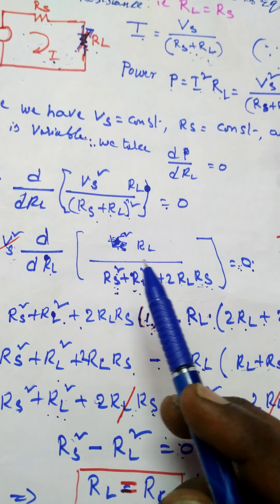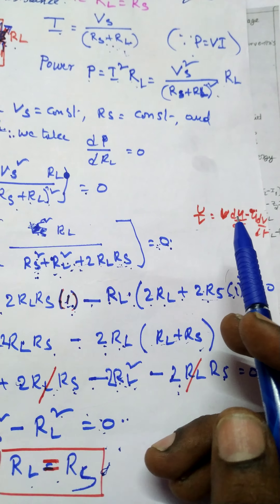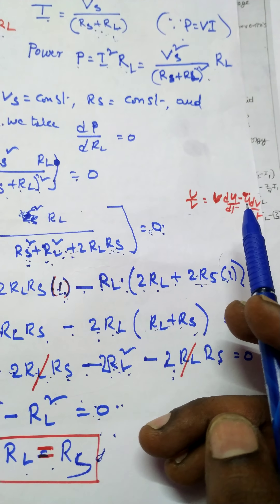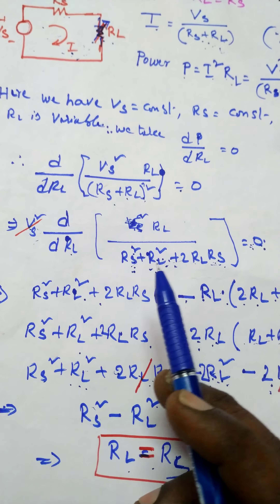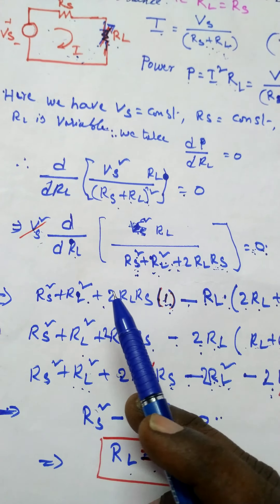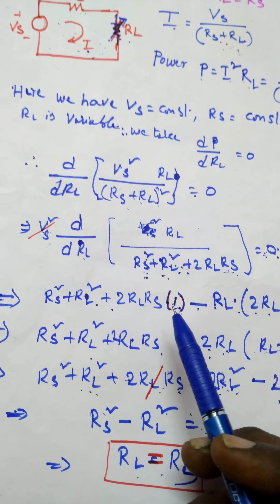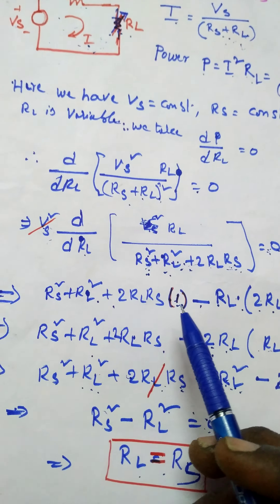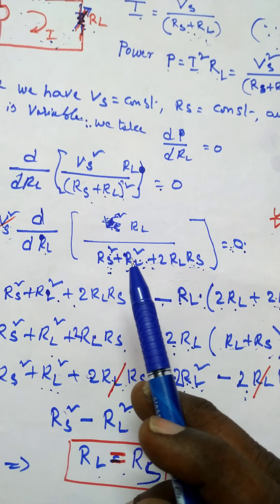This is in the form of the u/v derivative formula. Taking the u/v formula: the derivative of u/v equals (v times du/dt minus u times dv/dt) divided by v squared. Here v is (RS plus RL) squared and u is RL. So v times du gives (RS squared plus RL squared plus 2·RL·RS) times dRL, which equals 1, and u times dv gives RL times (2·RL plus 2·RS), where RS is constant so its derivative is 0.